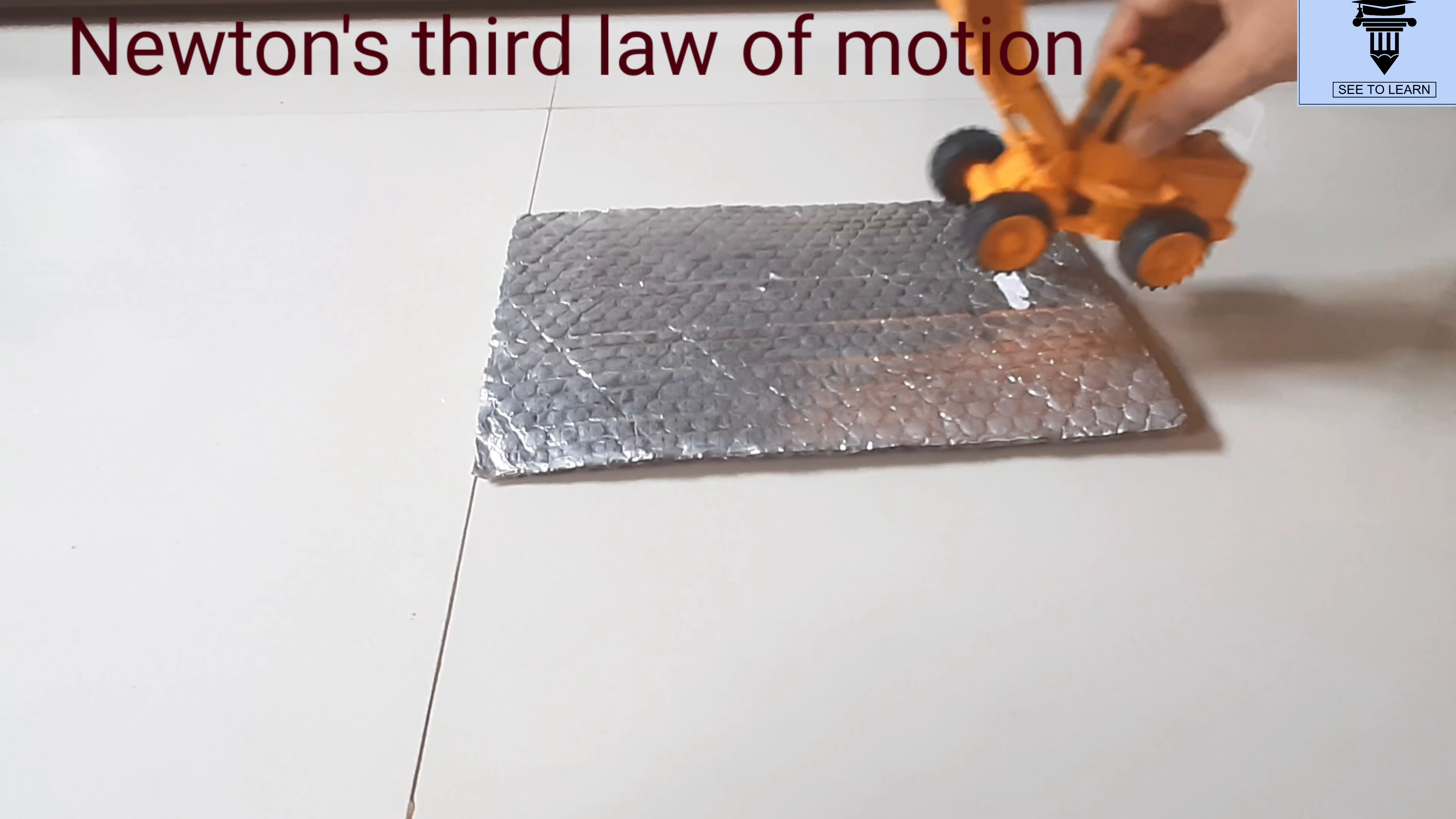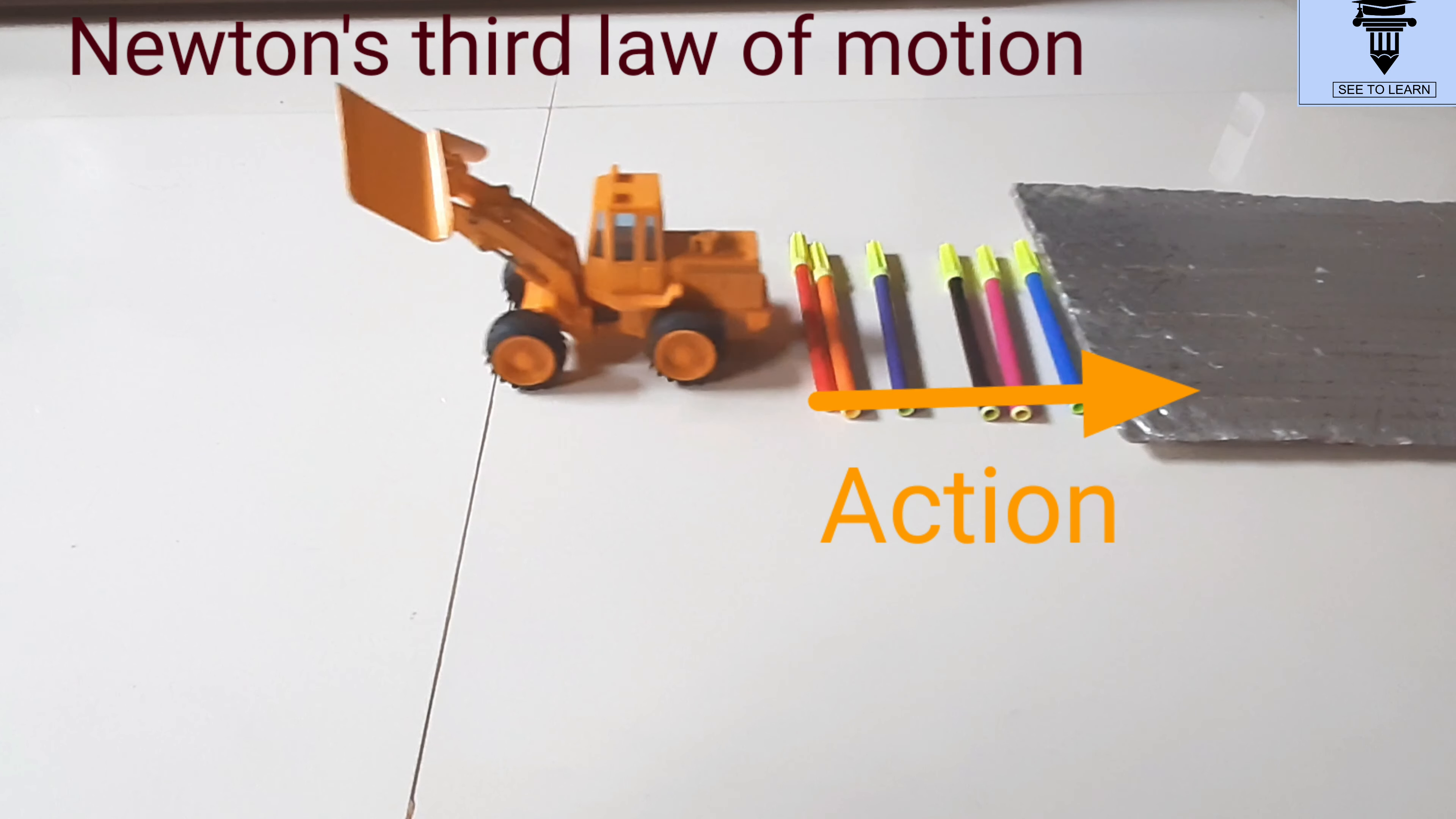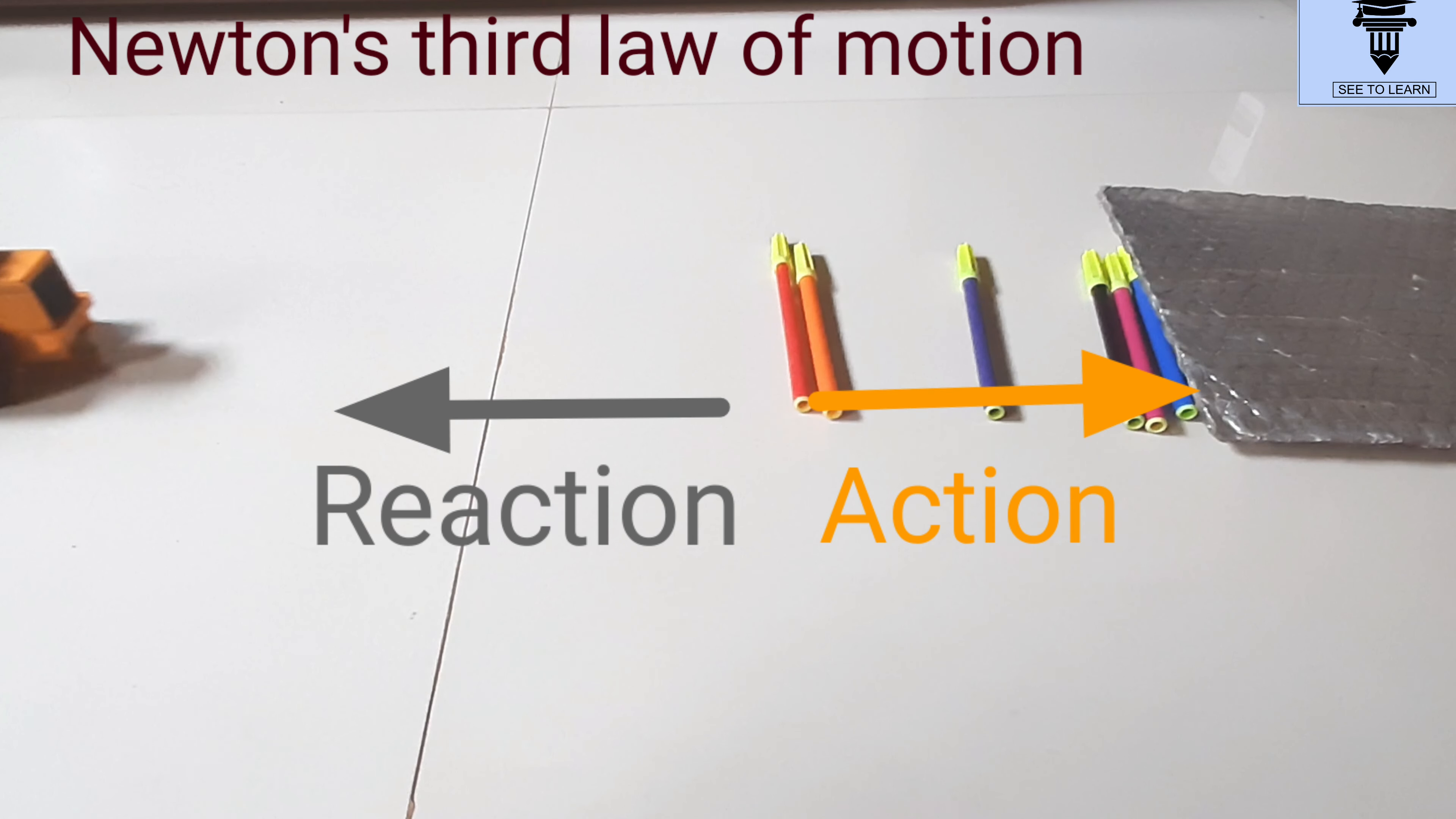It is the action force exerted by the spinning wheels of the car. The wheels push the ground backwards. The reaction is the forward push by the ground on the car. This accelerates the car forward.